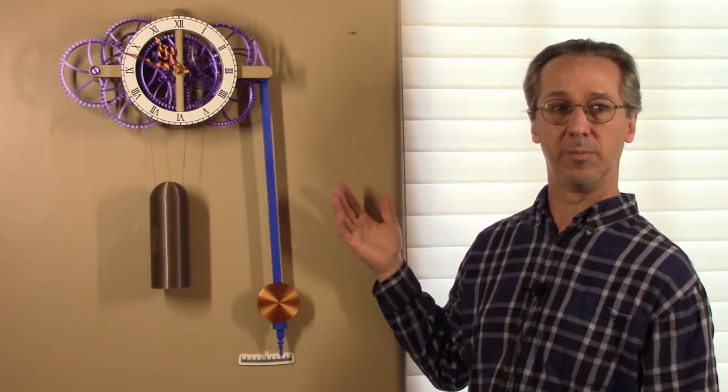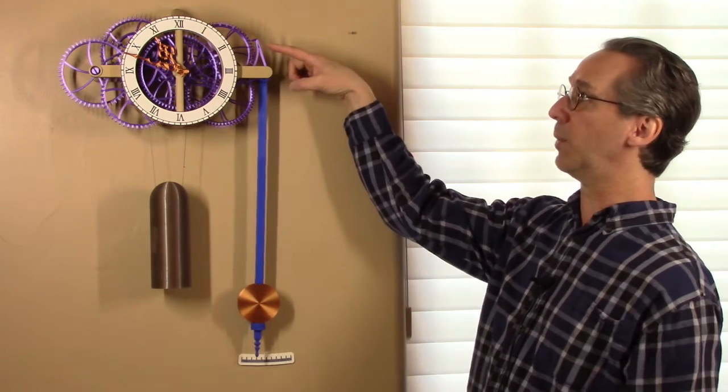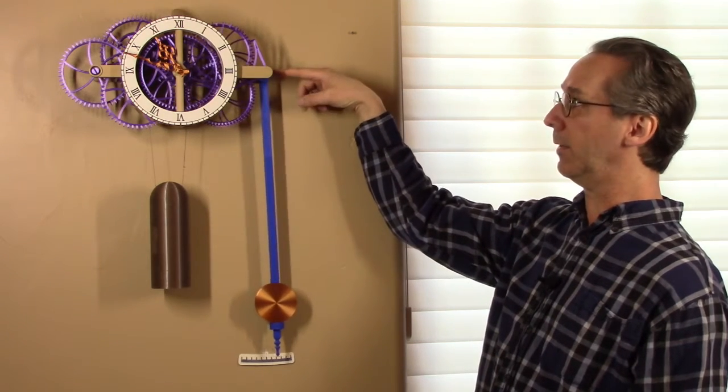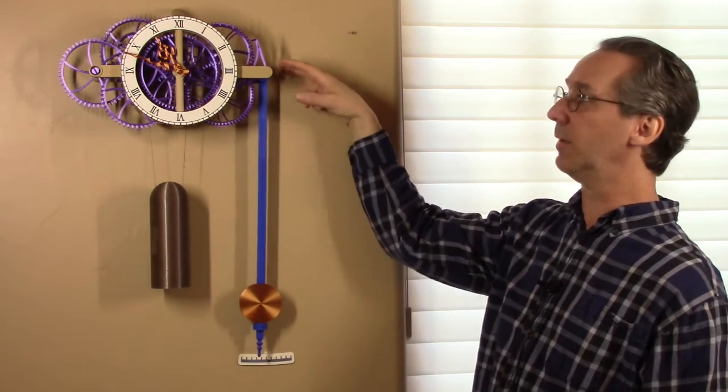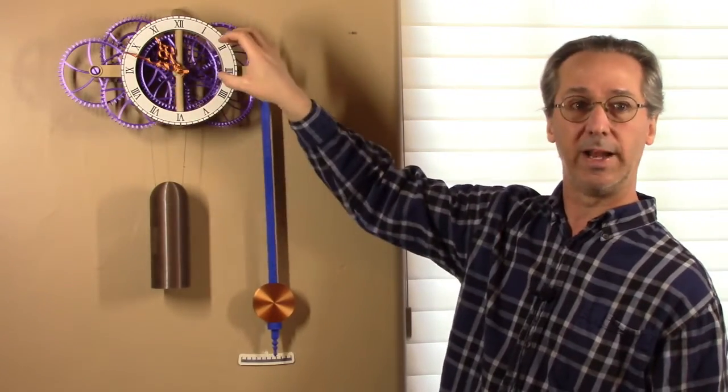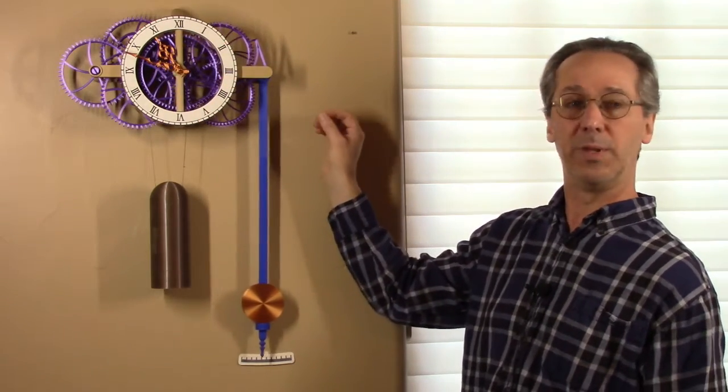This clock is working right now, but let's suppose that it wasn't. How do you debug it? Well, the best way is to isolate the parts into easy-to-test components. One component being the pendulum bearings, the rest of the gear train, and then also the beat of the clock. So let's just start focusing on those one by one.